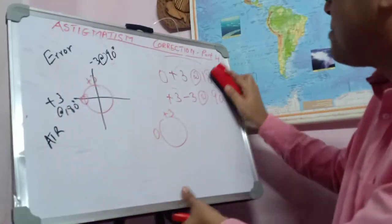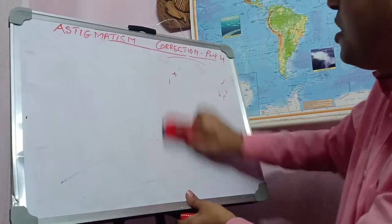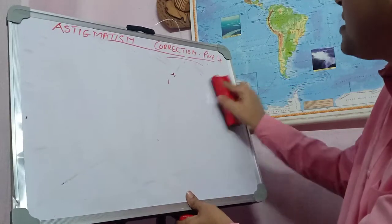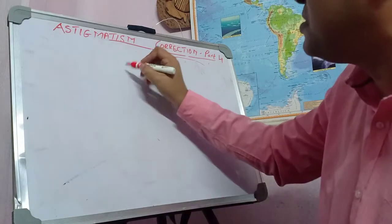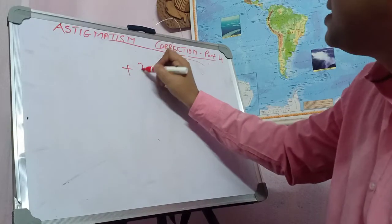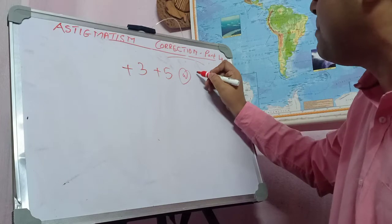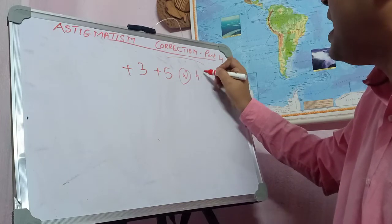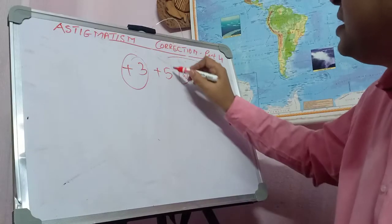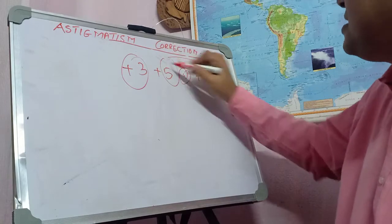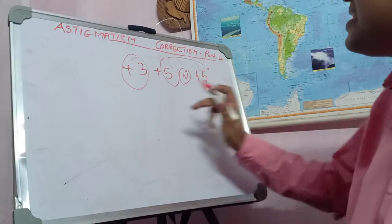Let's take more examples. This patient has both sphere power and astigmatism — sphere power, cylinder, and astigmatism at a given axis. The patient is a hyperope because it's a plus 3 sphere. The patient also has a quite high cylinder power of 5 diopters at 45 degrees. This is the correction that has been given to the patient, so how do you prepare the glass?